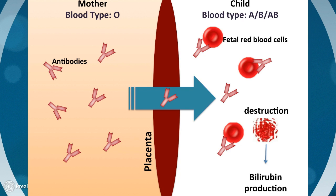During pregnancy, the antibodies from the mother can seep through the placenta and enter the fetus. This doesn't always pose a huge risk to the child, but in some cases in which the mother is blood type O and the child is either blood type A, blood type B, or blood type AB, these antibodies can bind to fetal red blood cells and break them down, releasing bilirubin. If enough bilirubin is produced, neonatal jaundice can result.